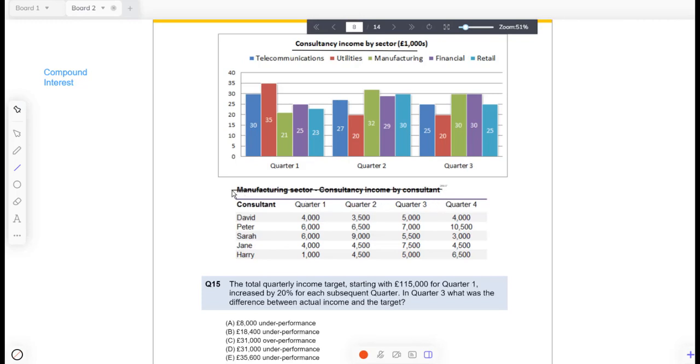This is manufacturing sector consultancy income by consultant. We're not going to need that. We're just going to need this by sector. And the quarter that we're interested in is quarter three. And if we add up all these incomes in that quarter three from the different sectors, this will account for the actual income. So let's add those up now. This represents the total Q3 actual income.